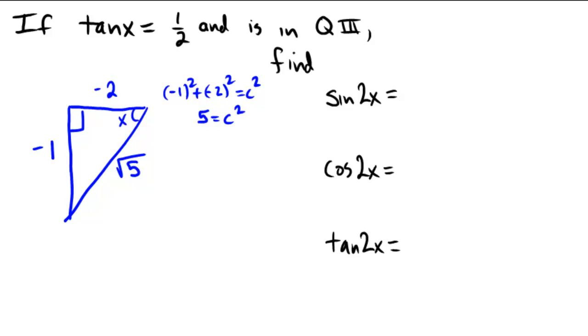So just like before, we're going to now apply the double angle formula here. Recall that the sine is 2 times the sine of the angle, which is opposite over hypotenuse, times the cosine of the angle, which is adjacent over hypotenuse. For a final answer of 2 times 2 is 4 times 1 is 4 over 5.